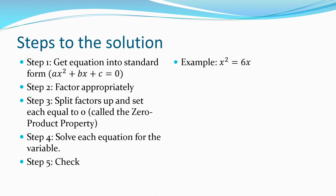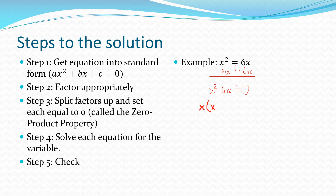Let's do a guided example: x squared equals 6x. The first thing I need to do is get it into standard form, which involves subtracting 6x from both sides. Now in standard form, I need to figure out the best way to factor. Looking at x squared minus 6x, the best method is GCF factoring. The GCF of x squared and negative 6x is x, so I take out an x and I'm left with x minus 6 in parentheses.